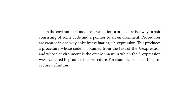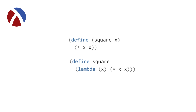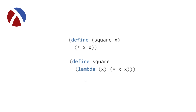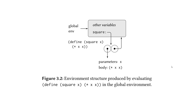Procedures are created in one way only — by evaluating a lambda expression. Consider the procedure definition: define square x, which is the multiplication of x and x. This is just syntactic sugar for: define square (no parentheses around square), with a lambda that takes a single parameter x, and the body is the same. So these two are equivalent. When it says the only way to create a procedure is by evaluating a lambda expression, don't be confused — defining procedures without explicitly stating lambda is just syntax sugar for the form that does have a lambda.